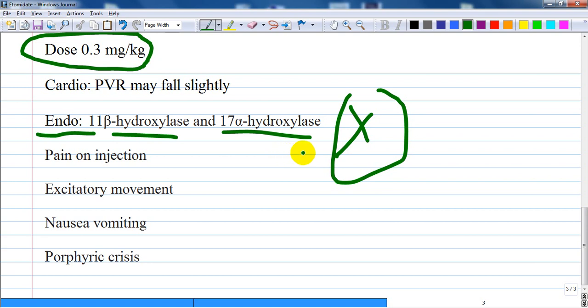Pain on injection, but new formulas with propylene glycol are trying to address this. Excitatory movement from the extrapyramidal action, nausea, vomiting, and porphyric crisis may be seen in some patients.